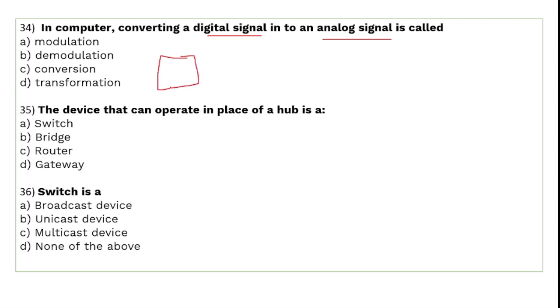Computers work with digital signals. When these digital signals need to travel through telephone lines, they must be converted to analog form. The device that performs this conversion is called a modem, and the process is called modulation.